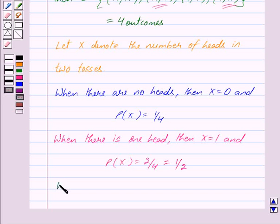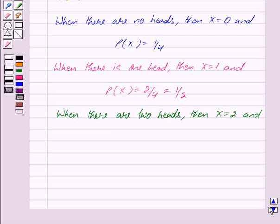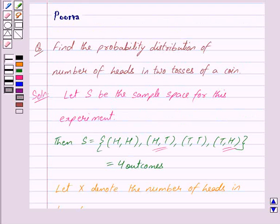When there are two heads, then X equals two and probability of X equals one upon four, because there is only one outcome with two heads out of these four outcomes.